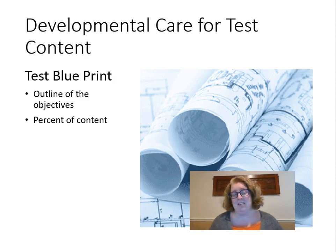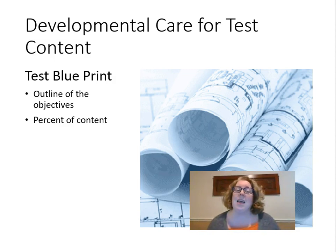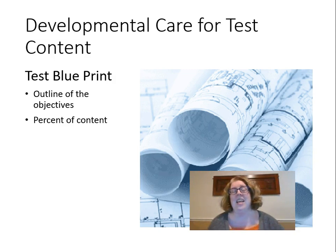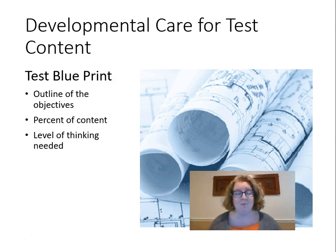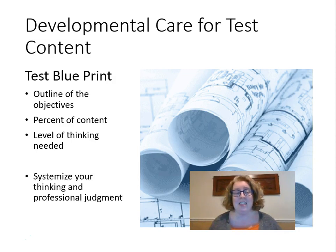A test blueprint is an outline of the objectives with the percent of content each objective should have. This helps us plan systematically what's on the test. If I just sit down to write a test, I often write lots of items about objectives that are easy to write items for and forget about things that are harder to write items for — even if those are most important. We'll practice test blueprints when we develop tests, and you can look at blueprints for major state tests to see what will be on them.